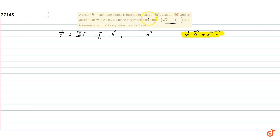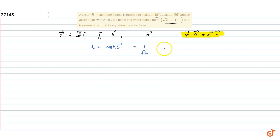To find n⃗, we use the direction cosines. The vector is inclined to the x-axis at 45°, so l = cos 45° = 1/√2. Then m = cos 60° = 1/2.